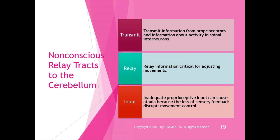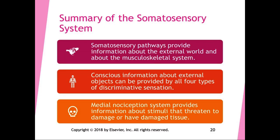The non-conscious relay tracks all go to the cerebellum. They have three functions: they transmit information from proprioceptors and from activity in spinal interneurons, and they relay information critical for adjusting movements. This is non-conscious proprioception. Inadequate proprioceptive input can cause ataxia because loss of sensory feedback disrupts movement control. The non-conscious relay tracks send large amounts of information to the cerebellum for this non-conscious proprioception.